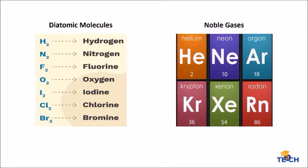Under normal atmospheric conditions, there are only 11 elements that are gases. This includes the diatomic molecules and the noble gases. These gases have common properties, including important fundamental properties that are measurable, such as volume, pressure, and temperature.